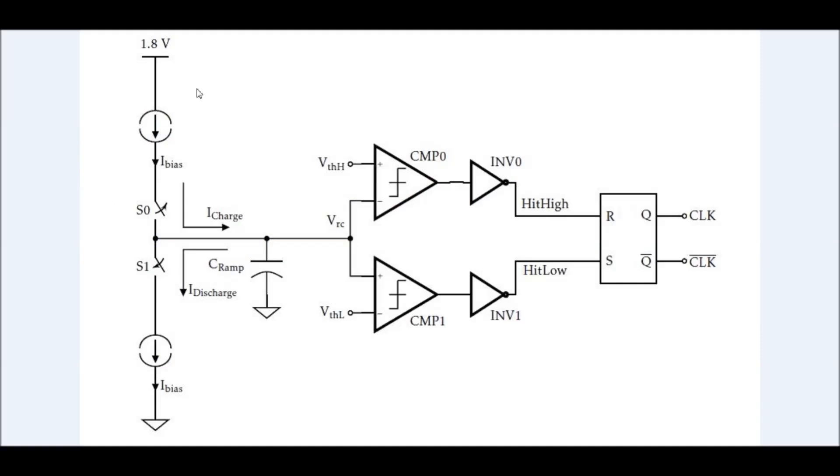This figure here is quite interesting because you can see these two constant current sources and two switches. So rather than a resistor, you basically have a constant current source. The switch closes, capacitor charges, then of course shown here is op-amps, but same thing as a Schmitt trigger.